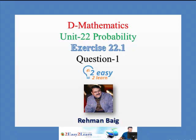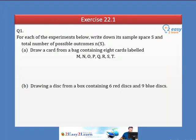D Mathematics Unit 22 Probability, Exercise 22.1, Question Number 1. For each of the following experiments, write down its sample space S and the total number of possible outcomes. Students should have a concept of sample space — all possible outcomes together are called the sample space.